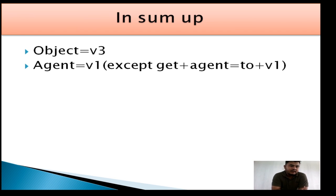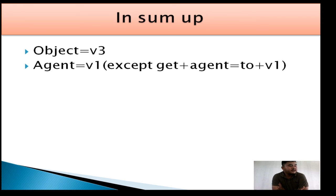To sum up: if all these causative verbs are followed by an object, the verb must be verb 3. If they are followed by an agent, the verb must be verb 1 — except for 'get.' If 'get' is followed by an agent, the verb must be verb 2 + verb 1 (verb 2 + infinitive). So if the causative verb is followed by an object, use verb 3; if followed by an agent, use verb 1 — but for 'get' with an agent, use verb 2 + verb 1. Thank you.